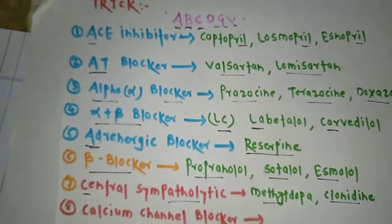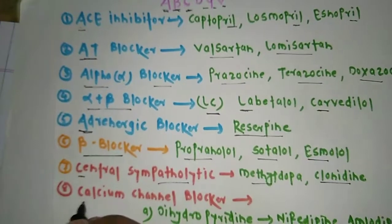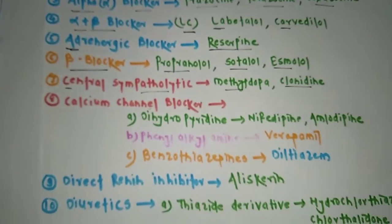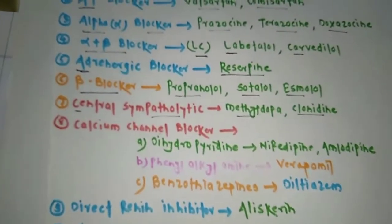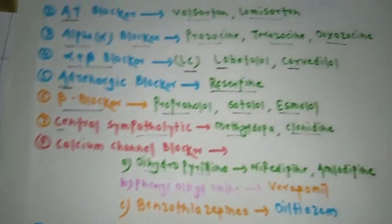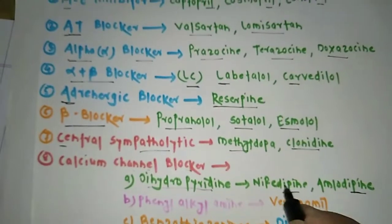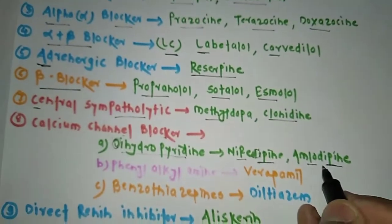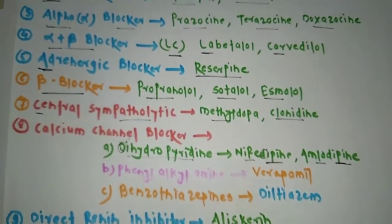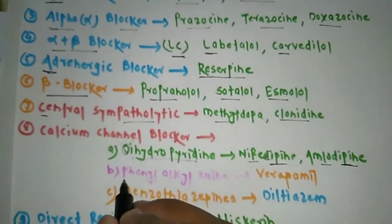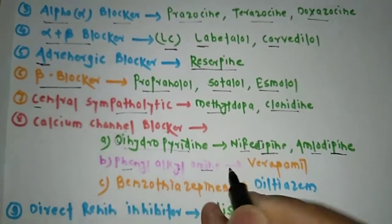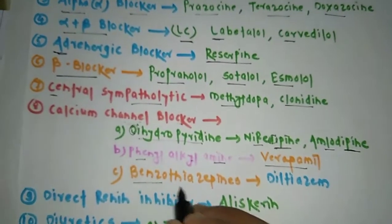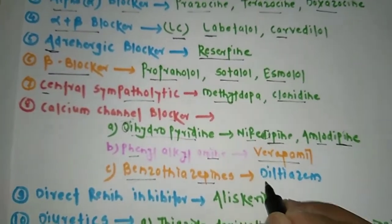Moving to C — the first C is Central sympatholytics. Examples are methyldopa and clonidine. The second C is Calcium channel blocker, which has three subcategories. First is dihydropyridines — all '-dipine' drugs, such as amlodipine, come under this. Second is phenylalkylamine, with the example verapamil. Third is benzothiazepine, with the example diltiazem.